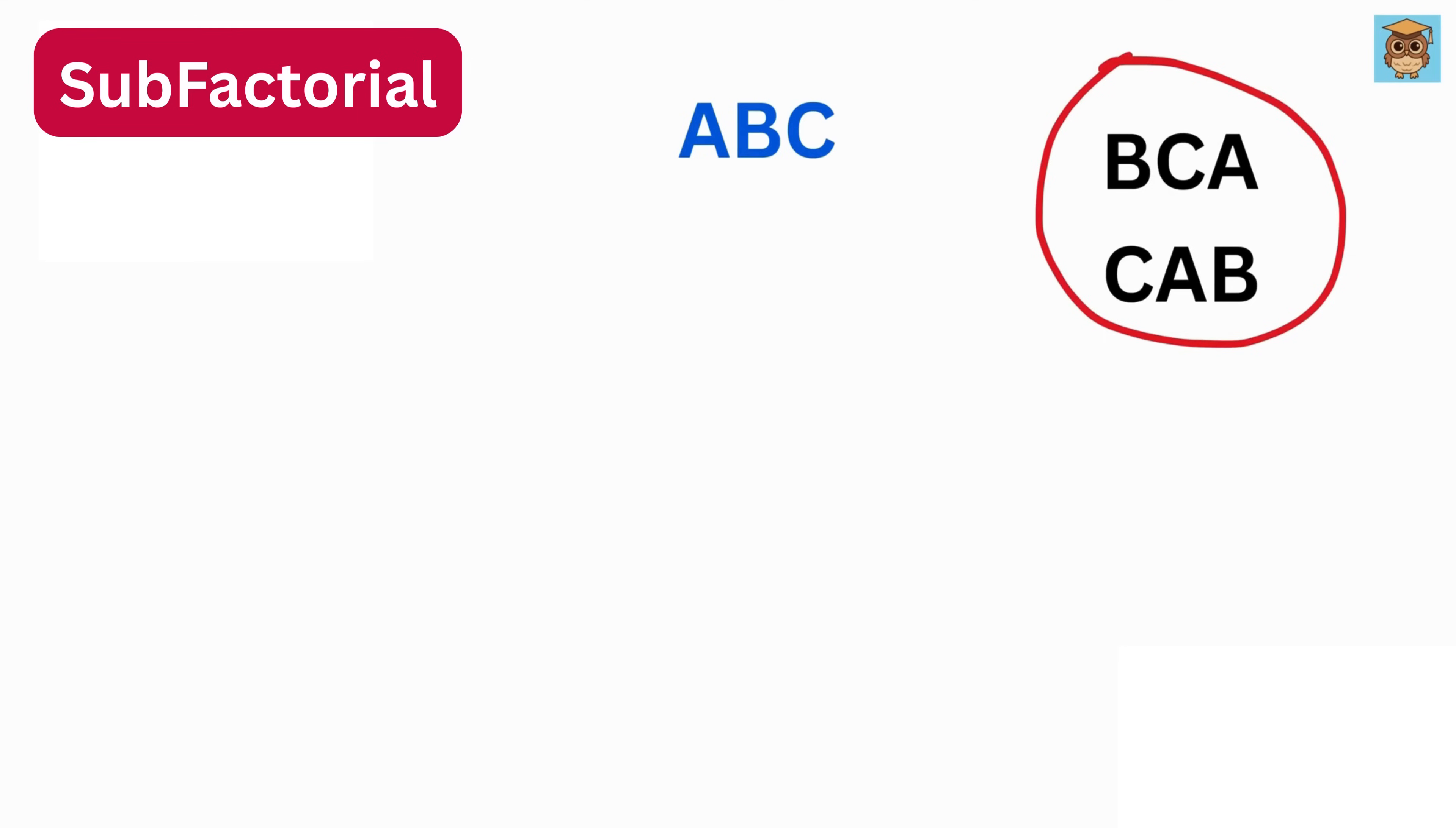This is the way to calculate a subfactorial. In case of 3 subfactorial, write 1 over 0 factorial minus 1 over 1 factorial plus 1 over 2 factorial minus 1 over 3 factorial. Now we solve each term.